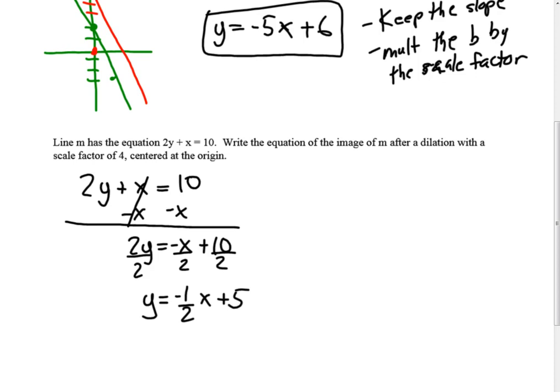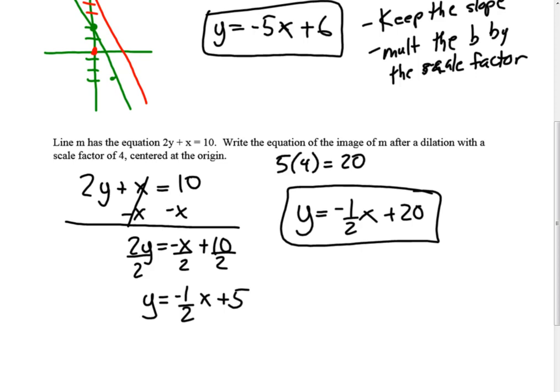Again, what we note is this line doesn't go through. So the real shortcut here now, scale factor of 4, 5 times 4 is 20. And so our new equation would be y equals negative 1 half x plus 20. Because they're parallel, we keep the slope the same. We just multiply that y-intercept by the scale factor.